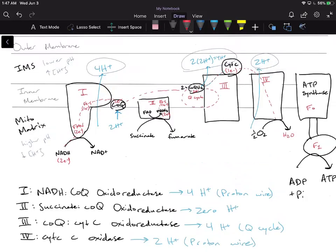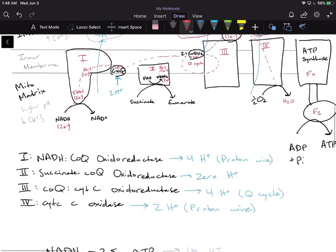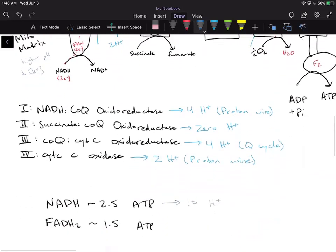So the first place where we're going to get protons from, if we start from complex 2, because we're going to skip over complex 1, is complex 3 and complex 4. So we're only going to get complexes 3 and 4. In total, we're only going to pump 6 protons. This is 10 protons pumped into the IMS, and this is 6 protons pumped into the IMS.